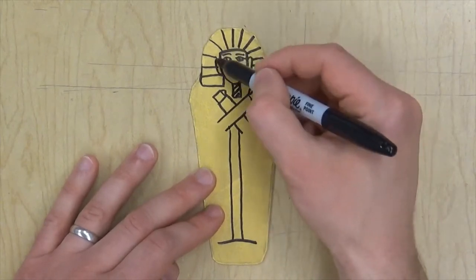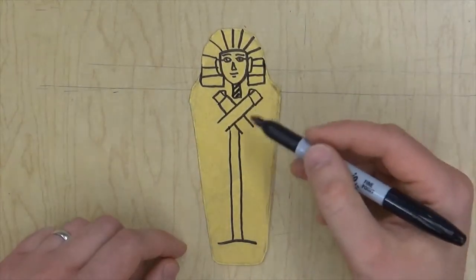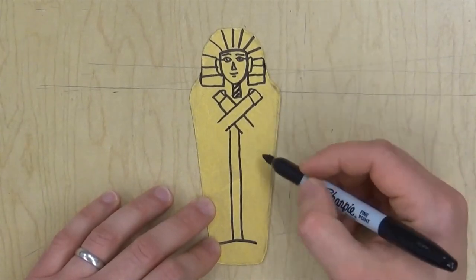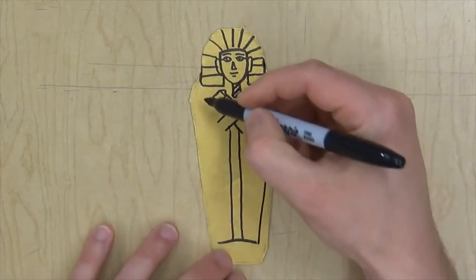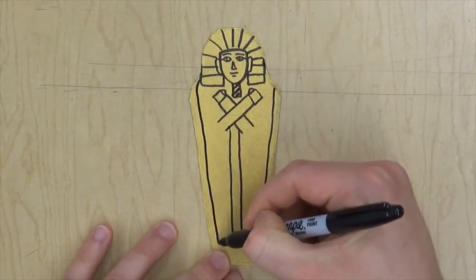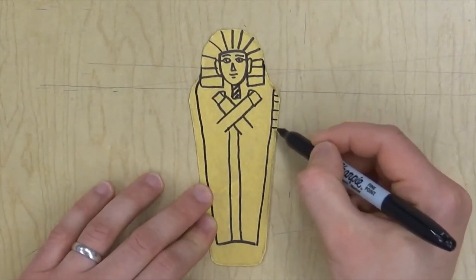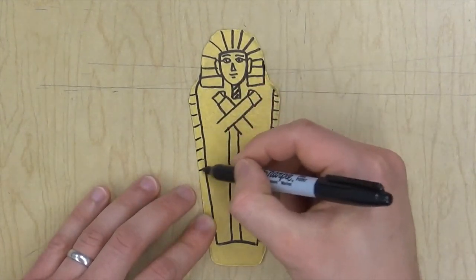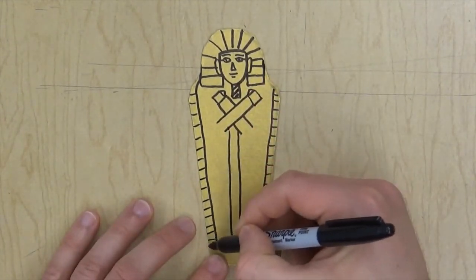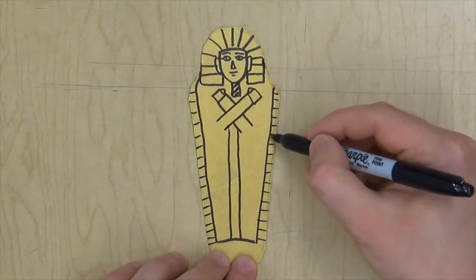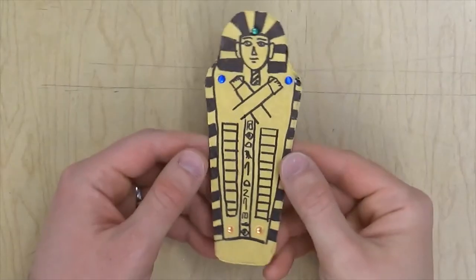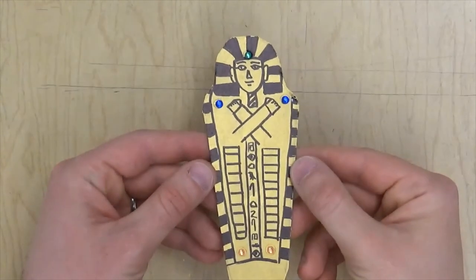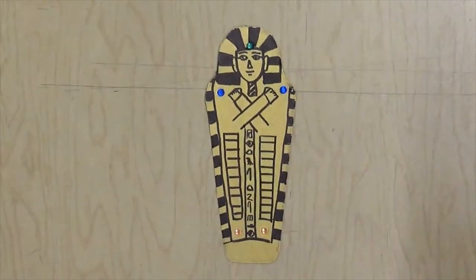Once you have that, you can add other patterns if you want. There are different things you could do—you could color in your patterns, you could add hieroglyphics, and then you can add some jewels to it wherever you want. So that's an Egyptian sarcophagus. Work hard and have fun!